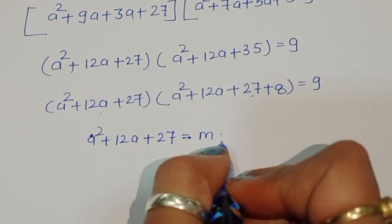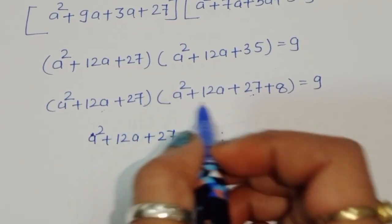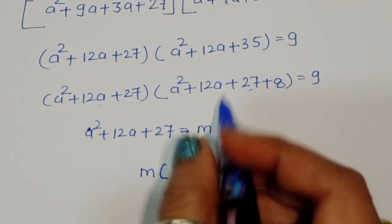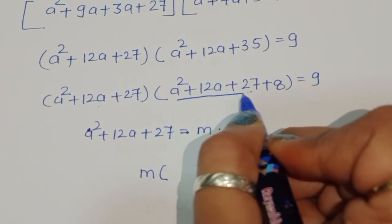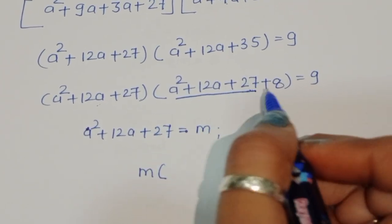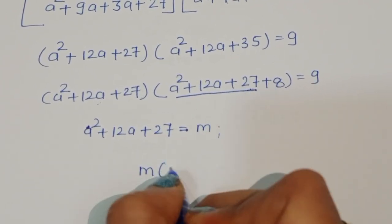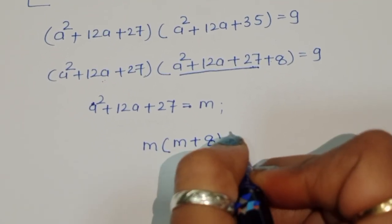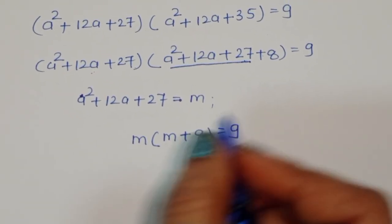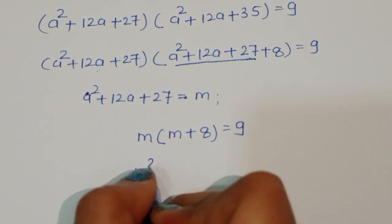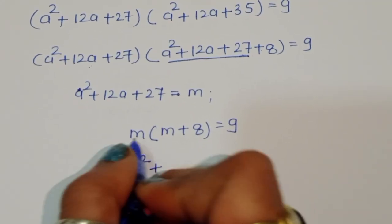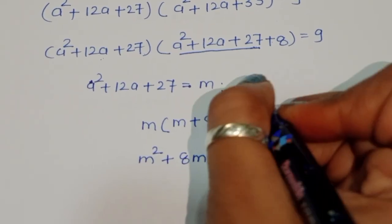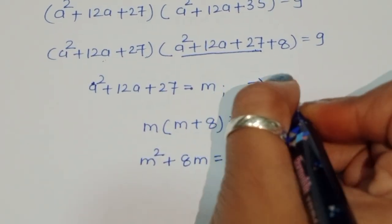We consider A² + 12A + 27 = M. So it will become M times (M + 8) = 9. Multiplying gives M² + 8M = 9. We can call this equation number 1.